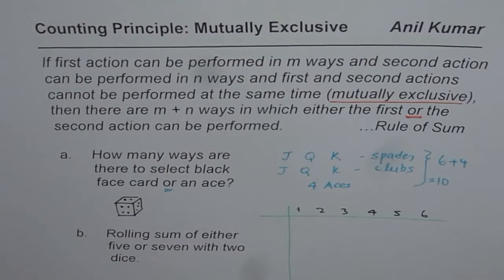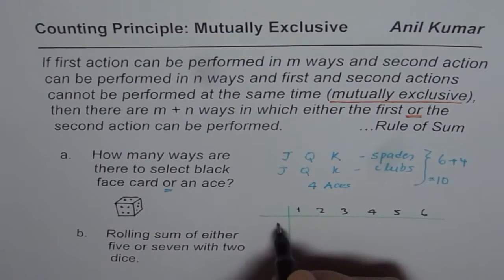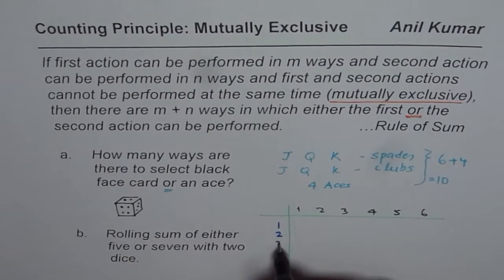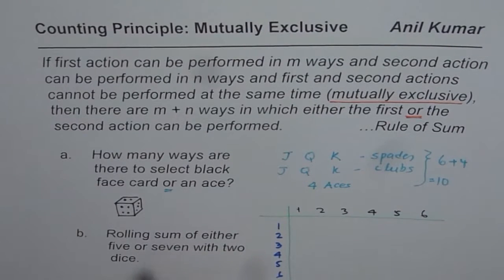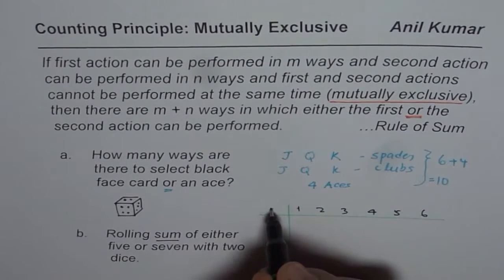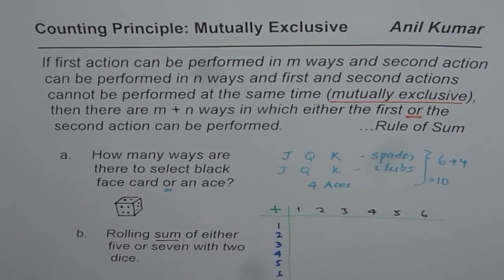One die could give you numbers one through six, and the other die could also give you one through six. When you add them up — sum means addition is being performed — we can fill in all possible totals. Adding one with one gives two, one with two gives three, and so on up to one with six giving seven.